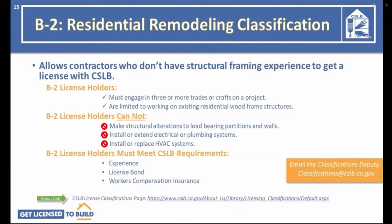CSLB's newest licensing classification is called the B2 Residential Remodeling Classification. The B2 allows contractors who don't have structural framing experience to get a license. B2 license holders must engage in three or more trades or crafts on a residential project and are limited to working on existing residential wood frame structures. They cannot make structural alterations to load-bearing partitions, cannot install or extend electrical or plumbing systems, and cannot install or replace an HVAC system. B2 applicants must comply with CSLB experience, examination, license bond, and workers' compensation insurance requirements.